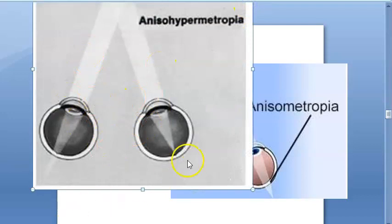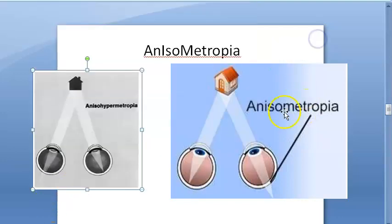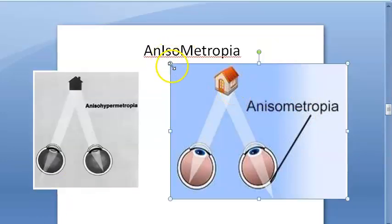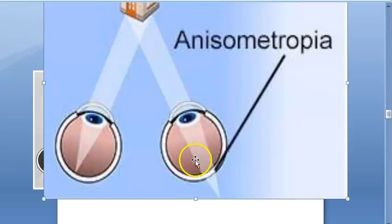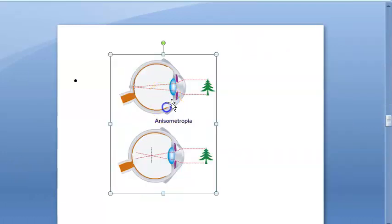Here the image is forming on the retina perfectly, and here the image is forming beyond the retina. So this is anisometropia — specifically, anisohypermetropia. Again here, the image is forming on the retina in one eye and behind the retina in the other — anisohypermetropia. All of these are anisometropias. It can also involve astigmatism — one eye can have astigmatism and the other can be fine, or both can have astigmatism.